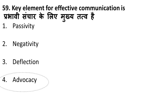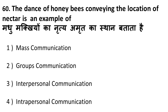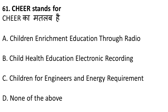Next question: the dance of honeybees conveying the location of nectar to other honeybees — also called the waggle dance — is an example of which type of communication? Honeybees are a team or group. Communication between a group or team is called group communication. Mass communication requires a very large audience like TV or newspapers. Intrapersonal communication is within oneself. Interpersonal is between two persons. Since honeybees are a team, this is group communication.